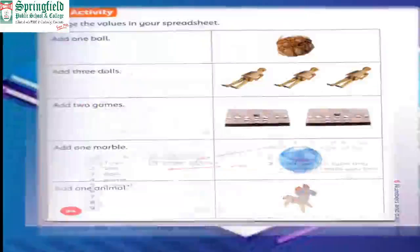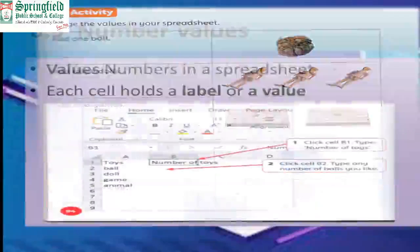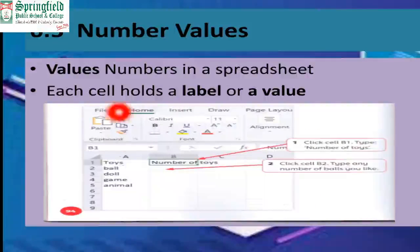Now what you have to do is add labels - ball, games, marble, animal - and then add the numbers. In this way, we are adding and changing the table. Values and numbers in the spreadsheet - each cell holds a label or a value.